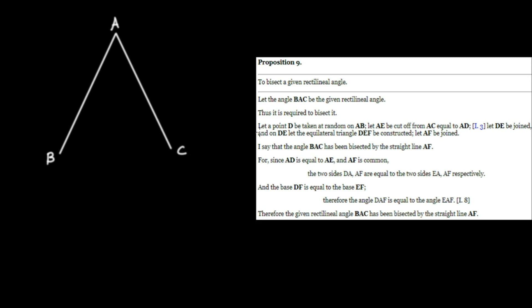The next step is let a point D be taken at random on AB. So I'll choose this point over here. That's point D. Now let AE be cut off from AC equal to AD. And recall we can do this from Proposition 3.